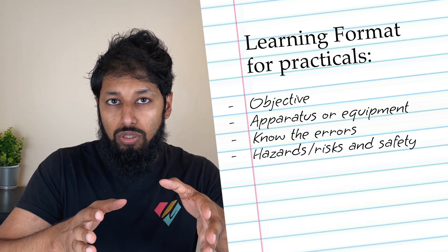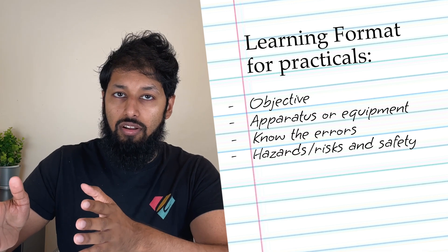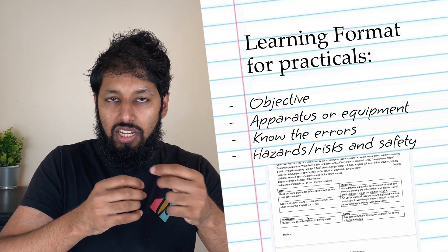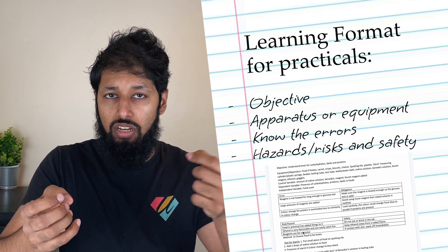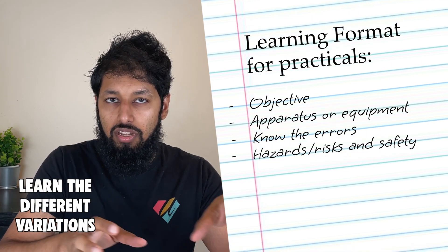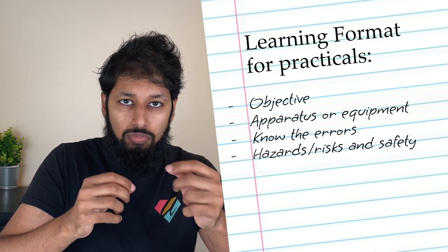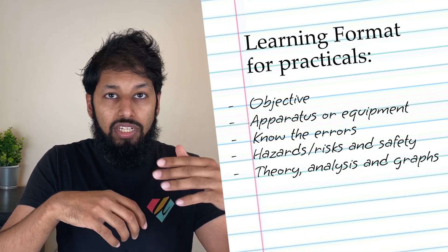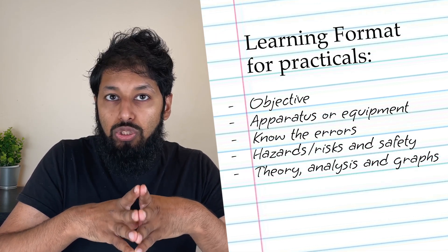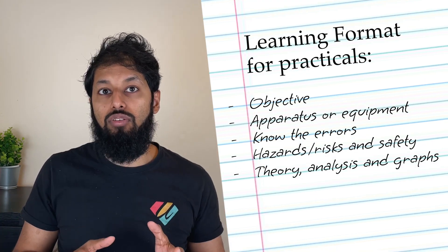Similarly, you want to do hazards or risks and safety in another column. Students learn them separately and I don't think that's useful because you can't then connect the recommended safety measure for a particular hazard. If there are variations in an experiment, learn the different variations. And sometimes you may need to know some theory, some analysis, or a particular graph needs to be drawn afterwards. What's important is you don't need to know the actual results, you just need to know the rough theory about it.